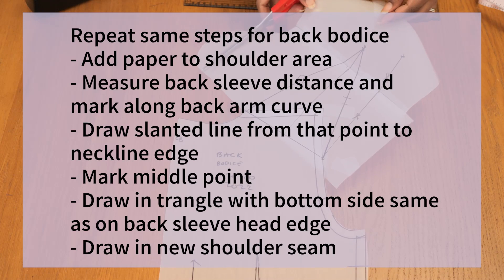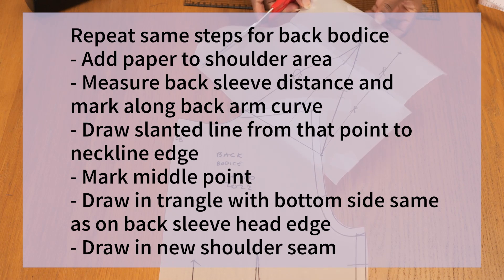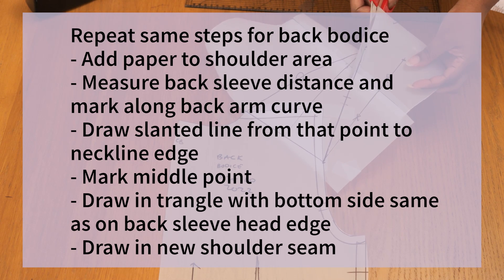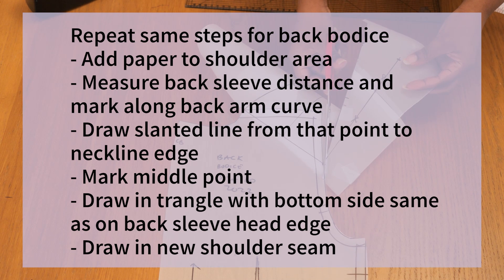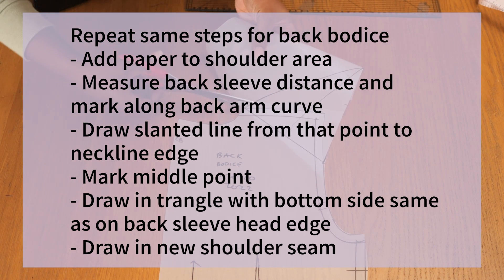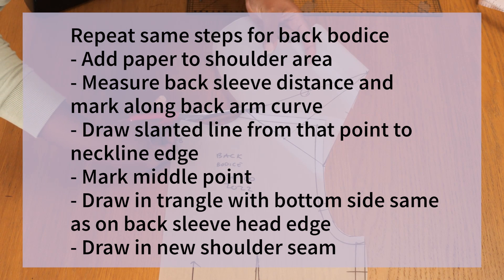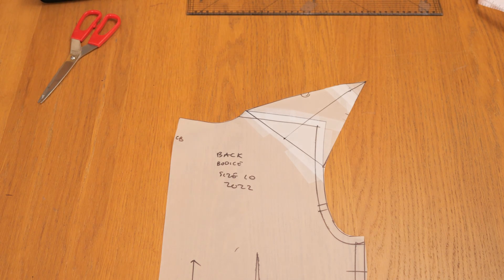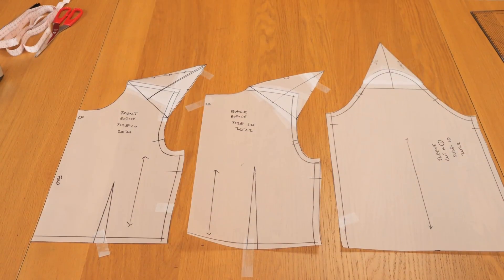For the back bodice, you will need to repeat the same steps. You need to add some extra paper so that allows you to add the triangular shape. Just remember on the back, you need to measure along your back sleeve and then mark the distance on the back arm curve. And then from that point, draw in your slant. Ensure that all of the points are indicated for what side goes into the sleeve and what side becomes the shoulder seam.